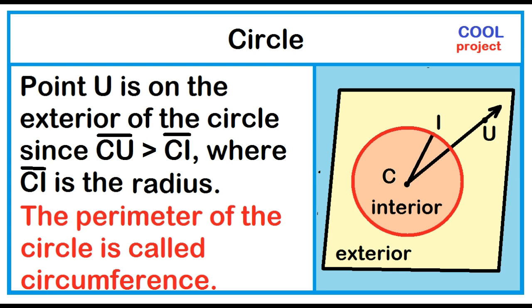Here's an illustration. Point U is on the exterior of the circle since Segment C-U is greater than Segment C-I, where Segment C-I is the radius. The perimeter of the circle is called circumference.